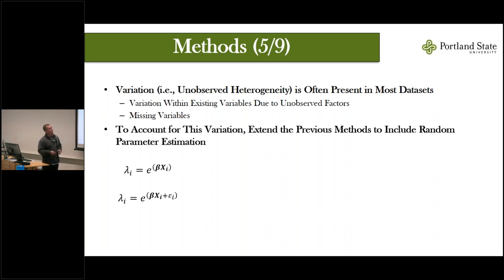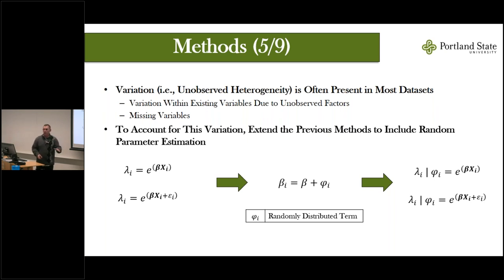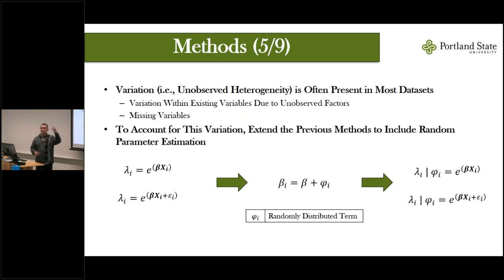To account for unobserved heterogeneity, we use random parameter estimation. We take the fixed beta coefficient from the negative binomial model and add a randomly distributed term, making the parameters conditional on that term. This allows beta to vary across observations. In a traditional regression, a coefficient is either negative or positive for all observations. By specifying a normal distribution for that term, we allow beta to be negative for some observations and positive for others — increasing crash frequency for some hot spots and decreasing it for others — thereby accounting for observation-specific variation from unobservables.